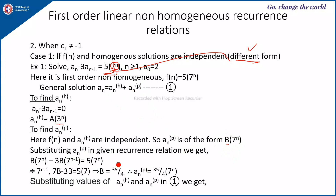By substituting the particular solution a(n)^(p) into the given recurrence relation, we get b·7^n - 3·b·7^(n-1) = 5·7^n. The common factor is 7^(n-1), so dividing the whole equation by 7^(n-1), we are left with 7b - 3b = 7·5, which gives 4b = 35.